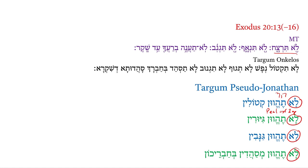Whereas before in the Hebrew and in the Aramaic, we had 'do not murder,' 'do not kill,' here we have 'do not be murderers.' And of course that's masculine plural to match the masculine plural of the imperfect there. 'Do not be adulterers.'